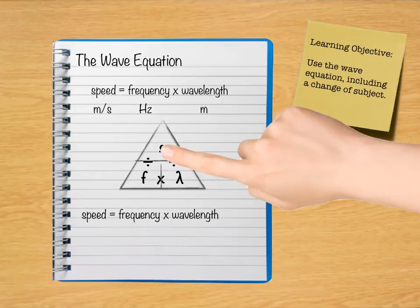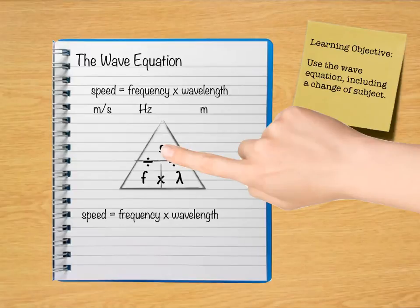In order to make speed the subject of my equation, I'll take my finger and cover over the S in the equation triangle. This leaves below it F times lambda — in other words, frequency times wavelength. Then I can write out my equation as you can see below.